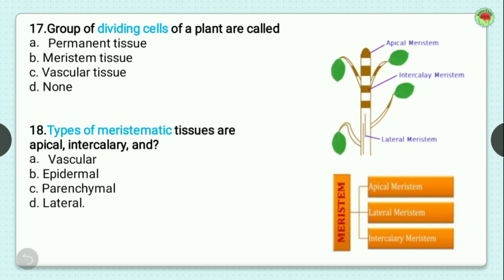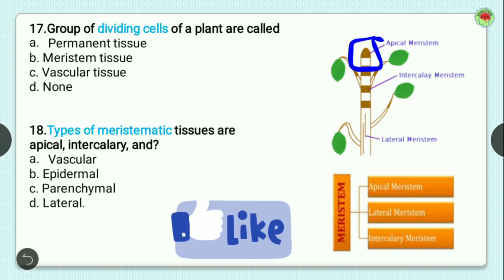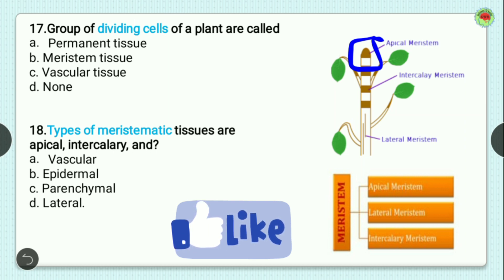Question number 17: a group of dividing cells of a plant is called? Options are permanent tissue, meristematic tissue, vascular tissue, or none. There are three types of meristematic tissue: apical meristem at the tip of the plant, intercalary meristem at the node, and lateral meristem present in the bark of the plant. These continuously divide. So the correct option is meristematic tissue, option B.